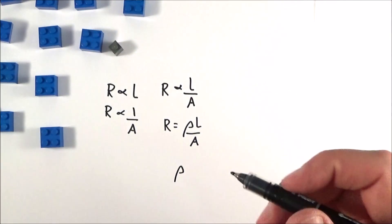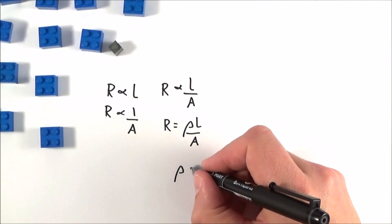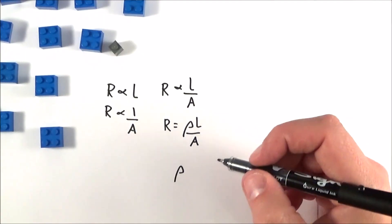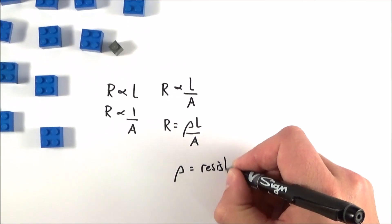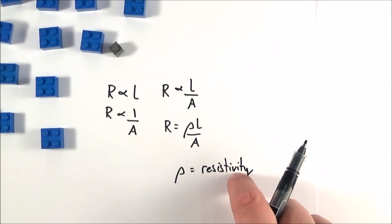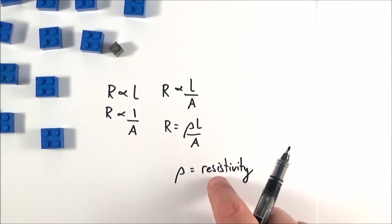We're using the symbol rho here, the Greek symbol which is also used for density and other things. This really depends upon the type of material that we have, and this is what we call the resistivity. The resistivity of copper is going to be different to the resistivity of steel or aluminum.